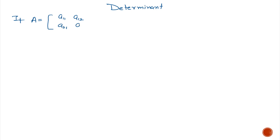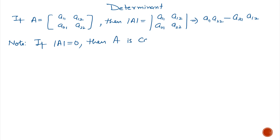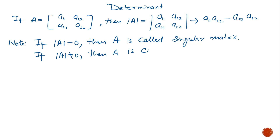If A is a 2 by 2 matrix where elements are a11, a12, a21 and a22, then the determinant of A can be calculated using upper diagonal minus lower diagonal, which equals a11 multiplied by a22 minus a21 multiplied by a12. Always remember that if determinant of A equals 0, then A is known as a singular matrix, and if determinant of A is not equal to 0, then A is called a non-singular matrix.